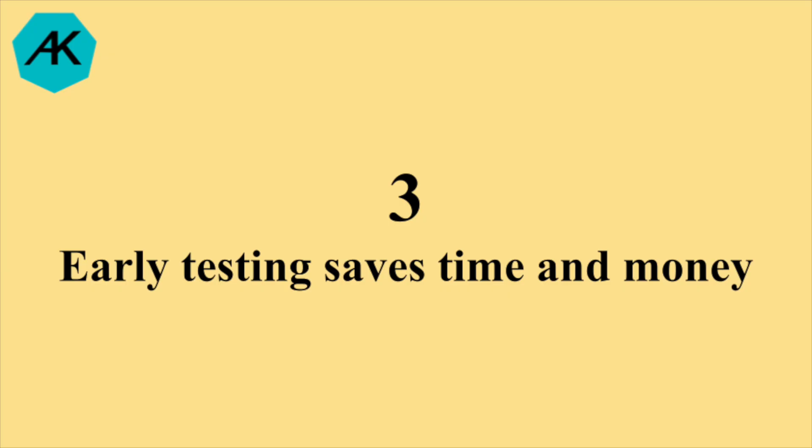The third principle of software testing is early testing saves time and money. When we start early testing in the software development lifecycle, we catch bugs early. This will save us time fixing the bug at the end of the release. When we are close to the release, that costs extra time, and extra money has to be invested for machines and human power. So it is always good to start testing early.